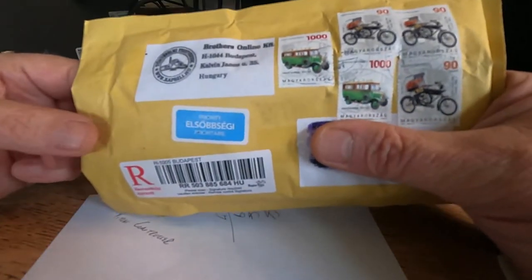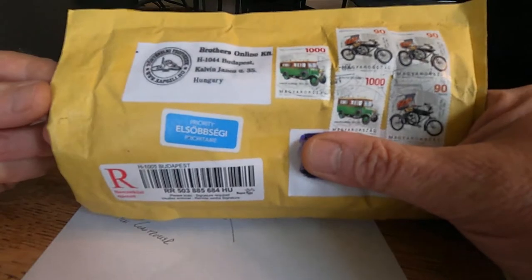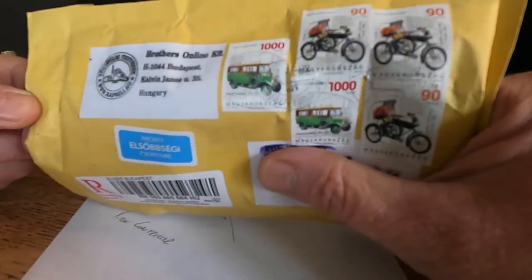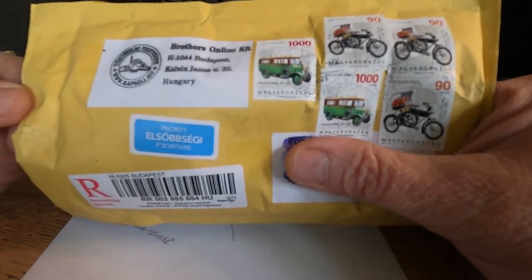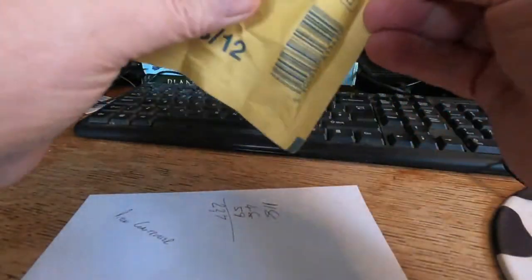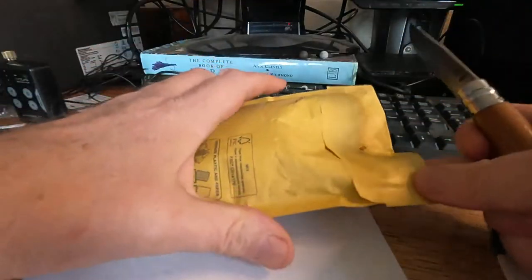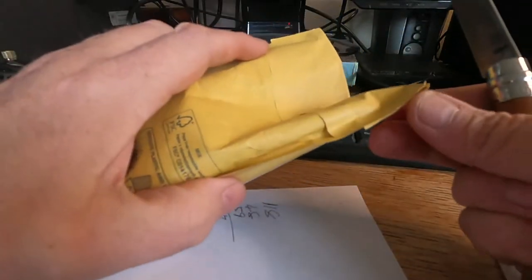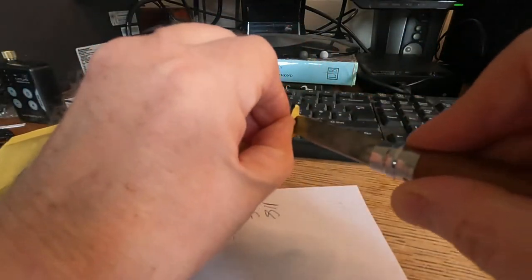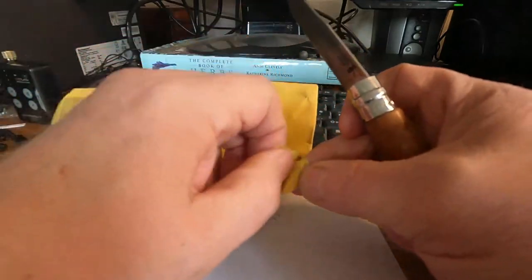A little package arrived in the mail today, two weeks from Budapest. Look at those stamps, cool aren't they? I've been waiting for this with some trepidation. Let's open it up and see what we've got. This should be a cartridge former from Cap and Ball to make some cartridges for a Walker.